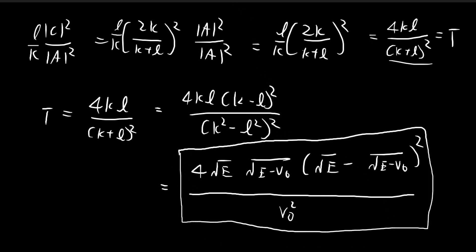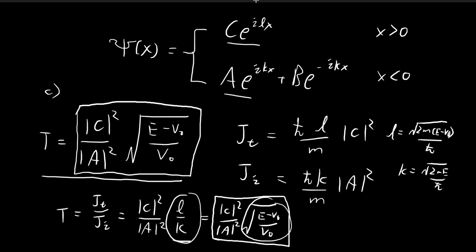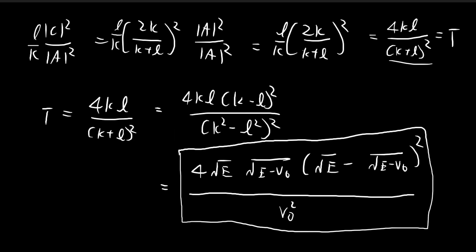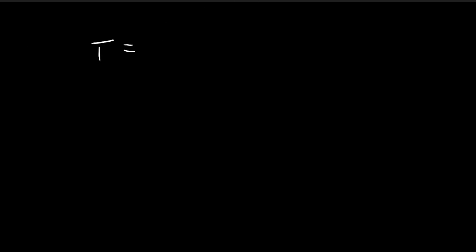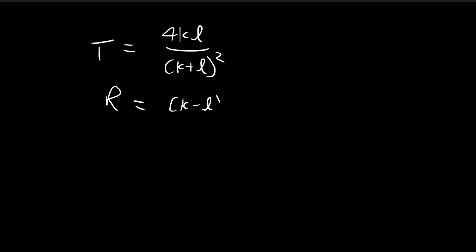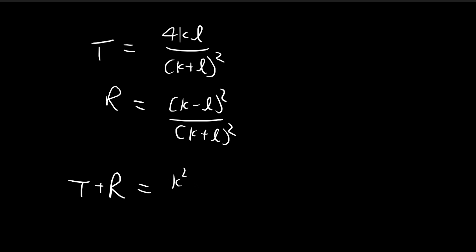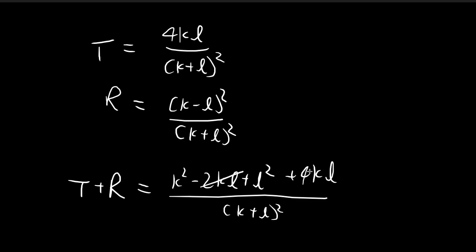One last check: the transmission coefficient plus the reflection coefficient should equal 1. Expressing everything in terms of k and L: T equals 4kL/(k+L)², and from the last video, R equals (k minus L)²/(k+L)². Adding them together, the numerator becomes k² minus 2kL plus L² plus 4kL equals (k plus L)², which cancels with the denominator to give 1. This confirms T plus R equals 1, checking the answer.